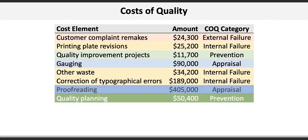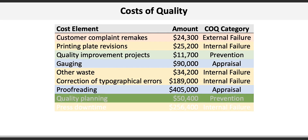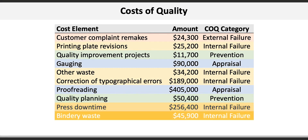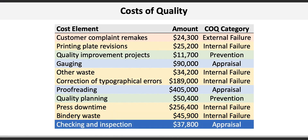Quality planning is a prevention cost. Press downtime and bindery waste are also internal failure costs since the customer doesn't see them. And finally, there's checking and inspection, which is an appraisal cost. Color coding costs can sometimes help with their classification as well.